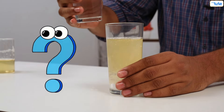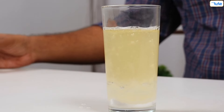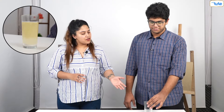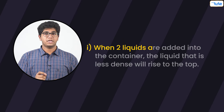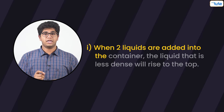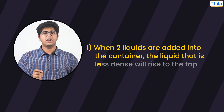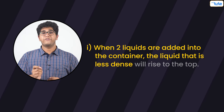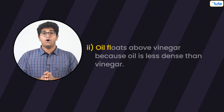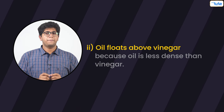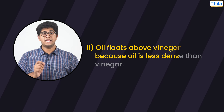Can you see the oil float? What do you think will happen next? Oil is not mixed with vinegar — but why? It's because when two liquids are added to a container, the denser liquid will fall to the bottom and the less dense liquid will rise to the top. Here, oil floats above vinegar because oil is less dense than vinegar.